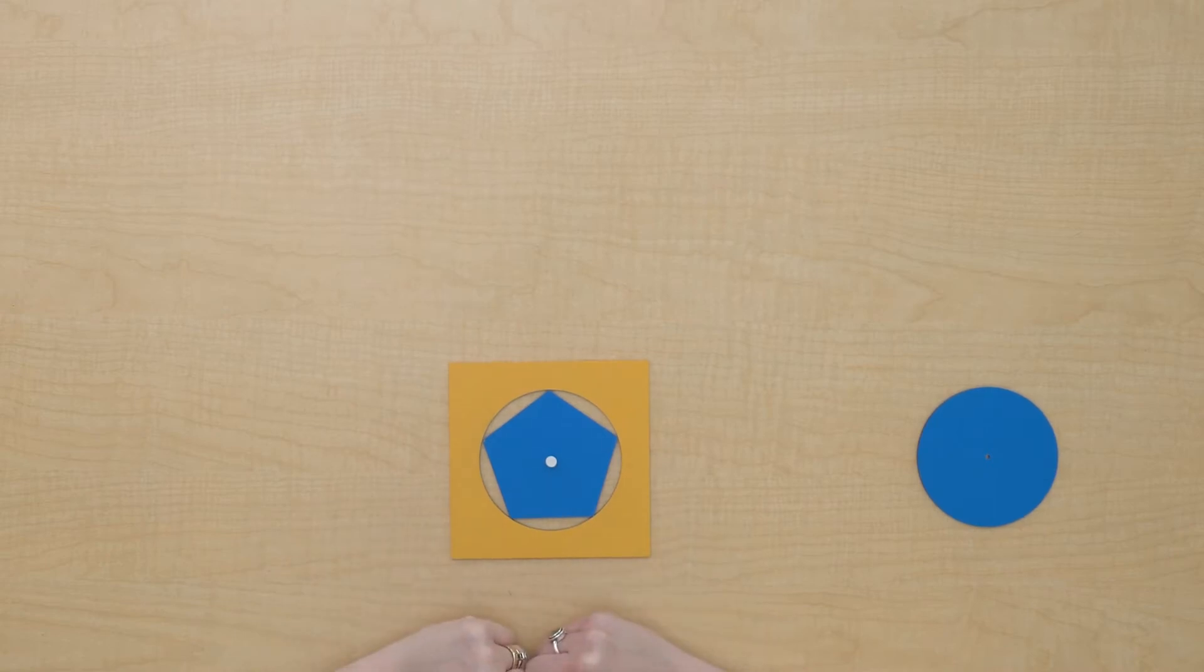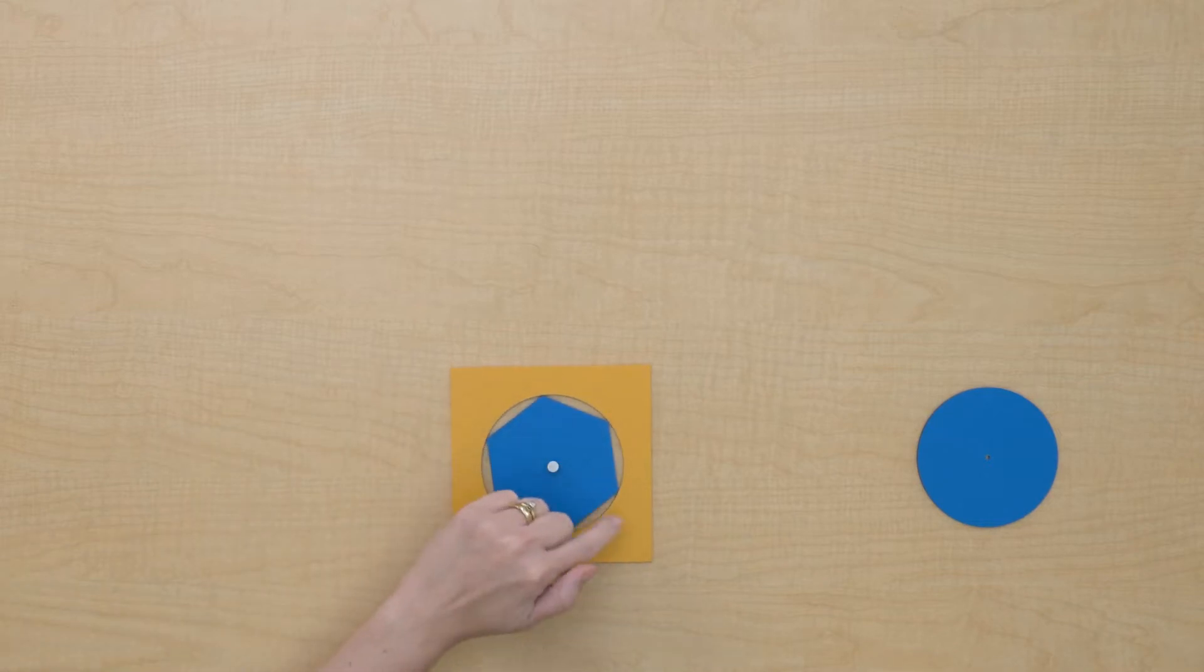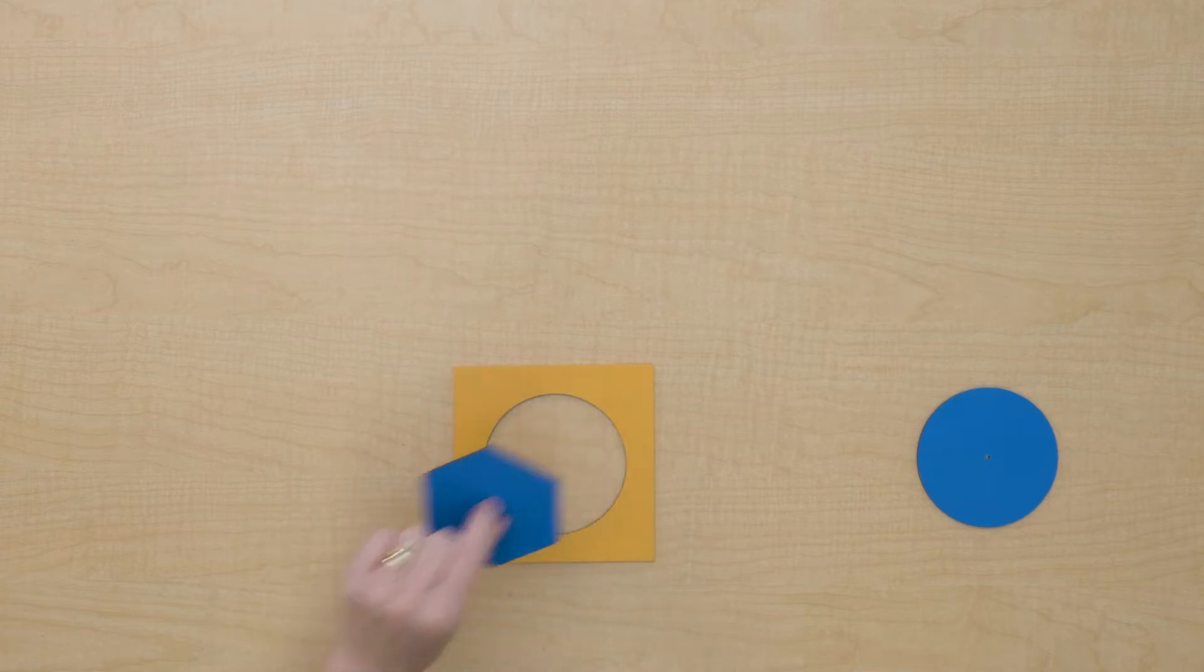If I place a pentagon in this frame, I see that it creates all these different segments around the side that the pentagon doesn't really fit or fill that space. Let's see about a hexagon. Oh, those segments got smaller, but it still doesn't exactly take up that space.